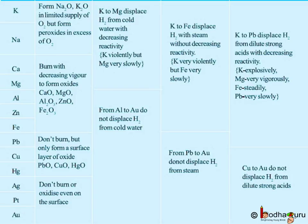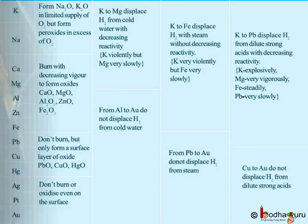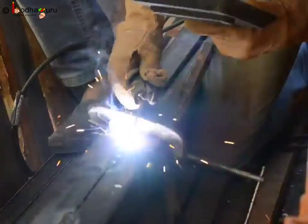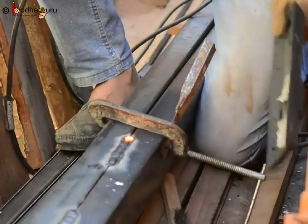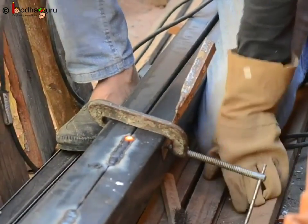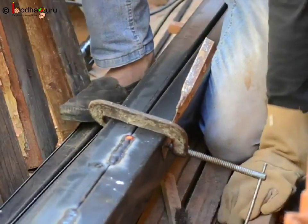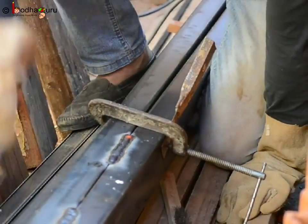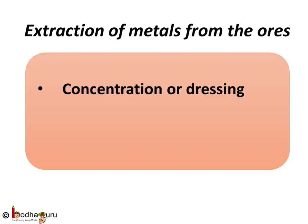The method used to extract metals from the ore in which they are found depends on their reactivity. Thus, the extraction process is different for different metal ores and not very easy. To simplify things, extraction of metals from ores can be divided into three main stages.